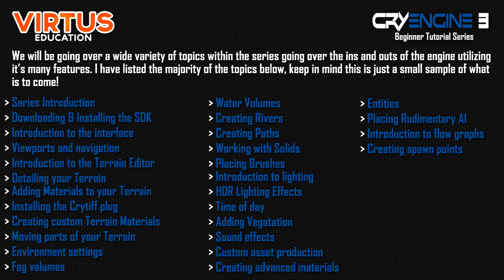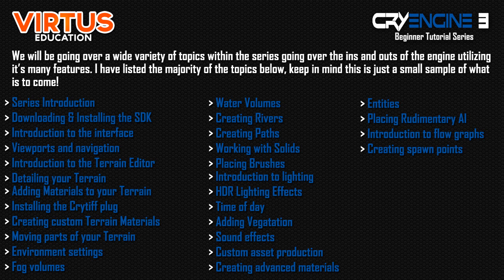Next, we'll be going over working with solids. CryEngine has a system similar to UDK where you can create basic geometry — similar to BSP — to make basic shapes for your level assets. Then we'll go over how to place brushes, which are essentially your static meshes, bringing in props to make up your level. After that, I'll introduce you to lighting — CryEngine is brilliant for lighting with many different light types and effects — and then we'll cover more advanced lighting effects like HDR, bloom, and lens flares.